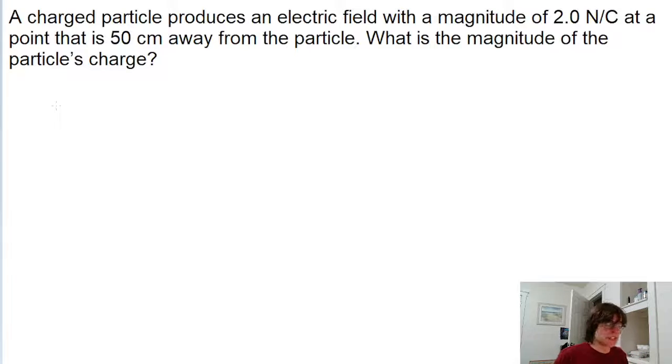The important thing to remember for this problem is that the magnitude of the electric field produced by a point charge is equal to the Coulomb constant multiplied by the magnitude of the charge producing the electric field divided by the square of the distance between the charge producing the electric field and the point we're analyzing.